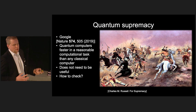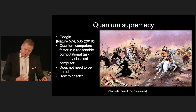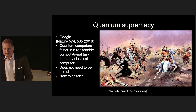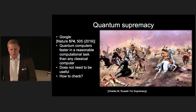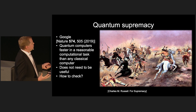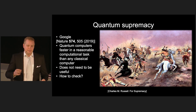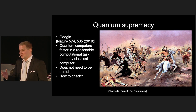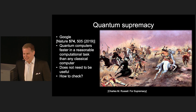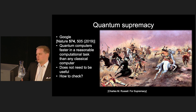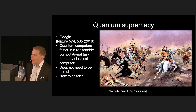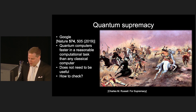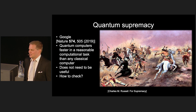By definition, quantum supremacy doesn't need to be useful — it's different from quantum advantage. The quantum computer is faster, but one of the problems is that if a classical computer can't solve the task, how do you check that the quantum computer gives you the right answer? This is not obvious. I think the next big milestone in quantum supremacy is to show it in a problem that can be classically checked easily — where the classical computer can't solve the problem, but once you have the solution, you could verify whether it's right or wrong. I hope we will achieve this milestone very soon.